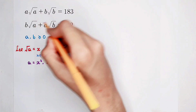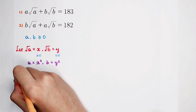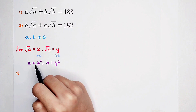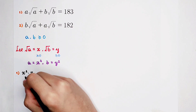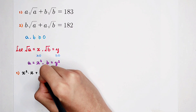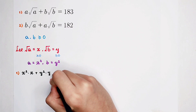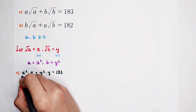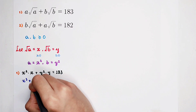Let's do it. Our first equation and our second equation. Our first equation will become: A is x squared, so it is x squared, times square root of A which is x — so x squared times x. Plus, since B is y squared, it is y squared times square root of B which is y. The right-hand side is 183. So x squared times x is x cubed, plus y squared times y is y cubed. So x cubed plus y cubed equals 183.